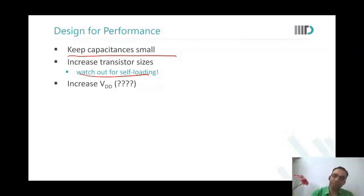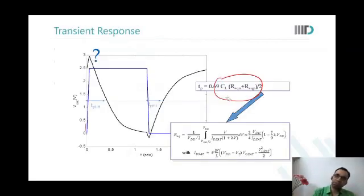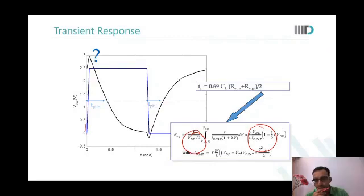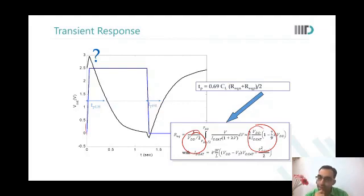What about VDD? The R_equivalent is dependent on VDD somewhere. You would want to increase VDD to reduce delays. A student asks why: 'Because the current would increase on increasing VDD.' Yes — because current increases, the overall resistance reduces, so delays reduce.